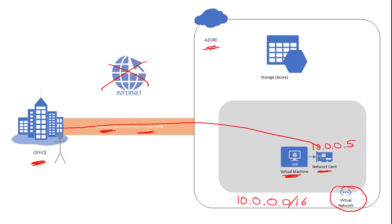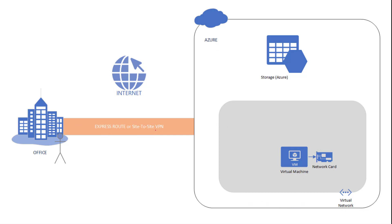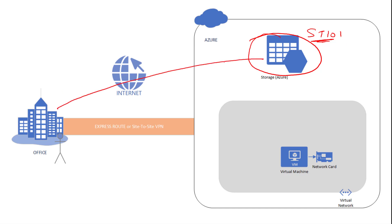Now let's contrast this scenario with another scenario. In Azure, you also have Azure Storage, and this Azure Storage is a public service — a public resource provider, a platform as a service. Let's say that the name of this storage account is st101. So this storage account will be available at st101.servicename.core.windows.net. For example, if you are trying to connect to a blob service on this storage account, the DNS name for that will be st101.blob.core.windows.net. From on-premises, if you have to connect to this particular storage account, you need to go through the internet, since it is a public service.